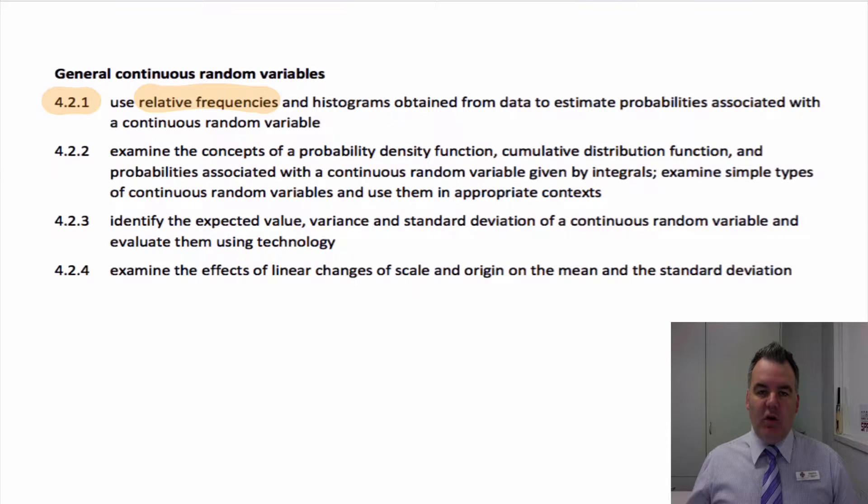In the next videos, we're going to look at the concepts of what a probability density function is, a cumulative distribution function, probabilities associated with continuous random variables, which is going to involve integration. We're going to look at the expected value or the mean and the variance and standard deviation of a continuous random variable like we did for discrete random variables. And then effects of the change of scale and origin, which is again, a concept that we've already looked at with discrete random variables. Multiply by 2 and add 1. What happens to the mean? What happens to the variance and standard deviation?